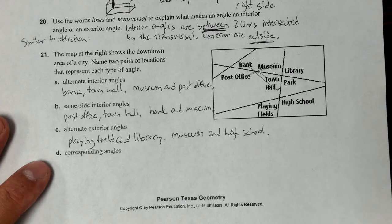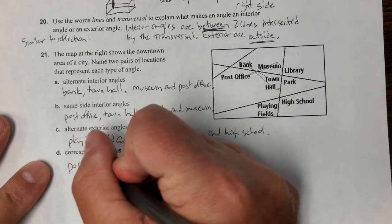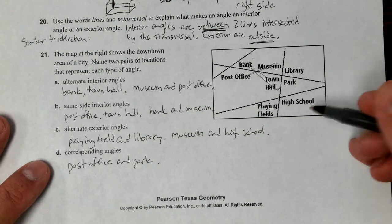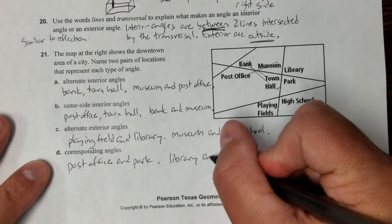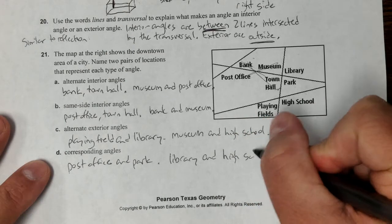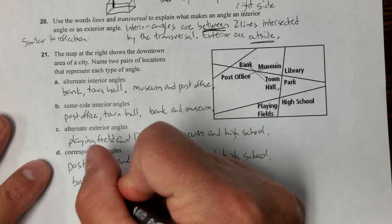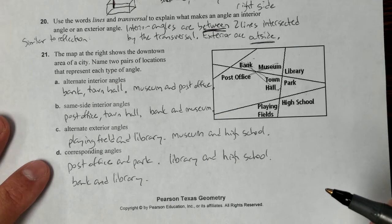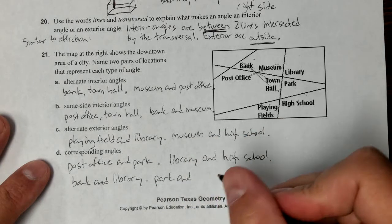And for corresponding, think about the post office and the park because you're skipping the town hall. Post office and the park. We can also say the library and the high school. There's several answers. Could have said the bank and the library, could have also said the park and the high school.